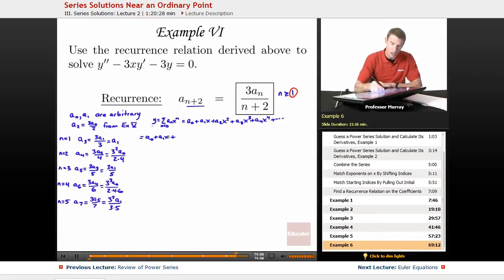A2X squared, now our A2 was 3A0 over 2. Our A3 was A1X cubed. Our A4 was 3 squared A0 over 2 times 4X to the 4th, plus 3A1 over 3 times 5 X to the 5th.